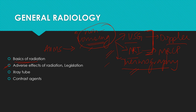The second topic is adverse effects of radiation and legislation. These are theoretical questions very important for All India examinations. For legislation, one needs to refer to current AERB guidelines for occupational workers, general population, and pregnant females. There are specific cutoff limits for radiation exposure for each group. Adverse effects of radiation such as stochastic effects and non-stochastic effects, and what constitutes the two, also needs to be known.